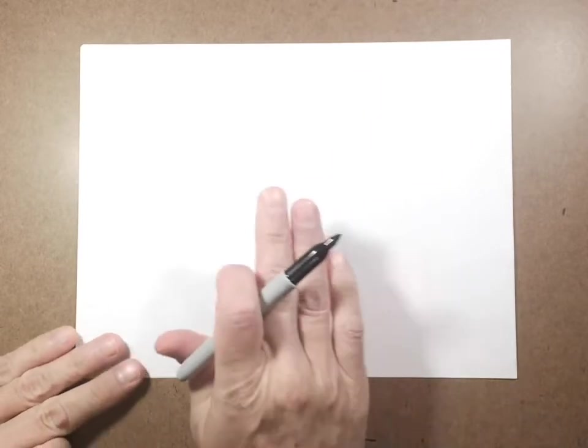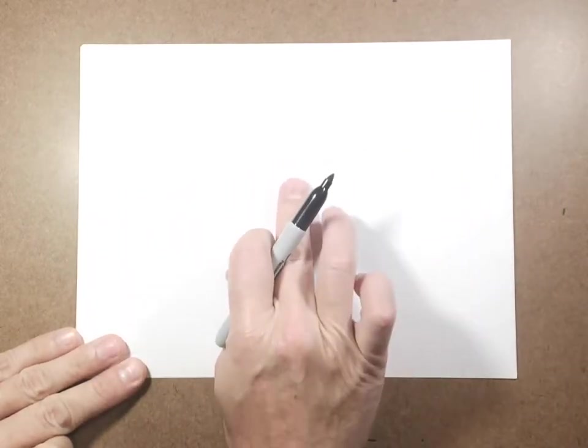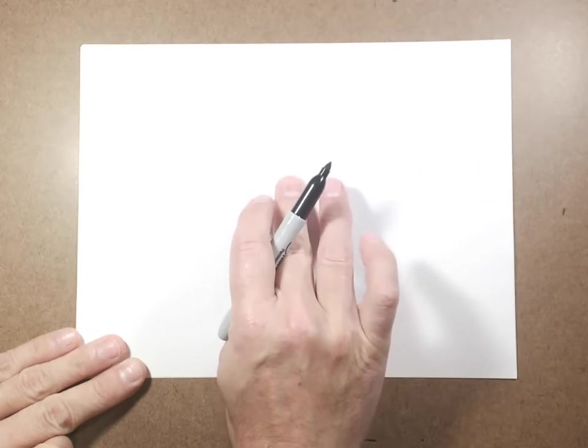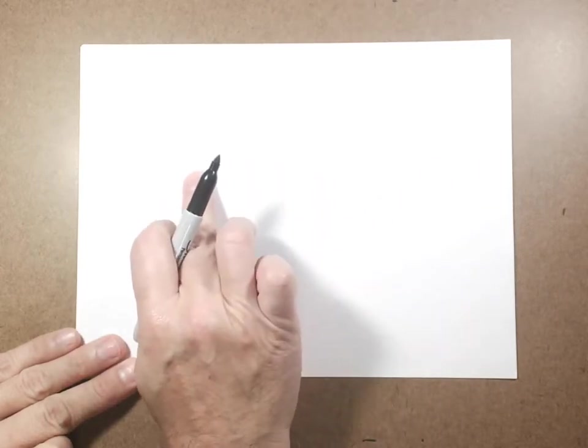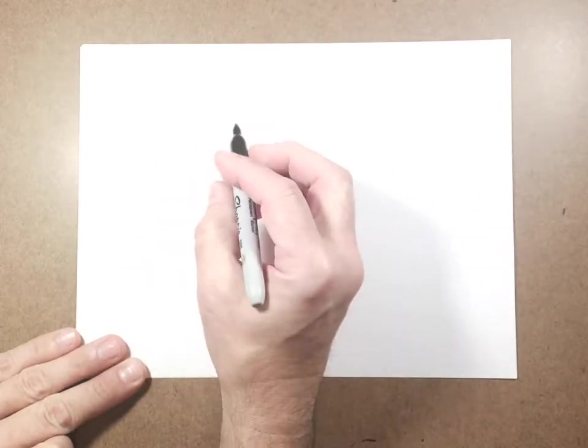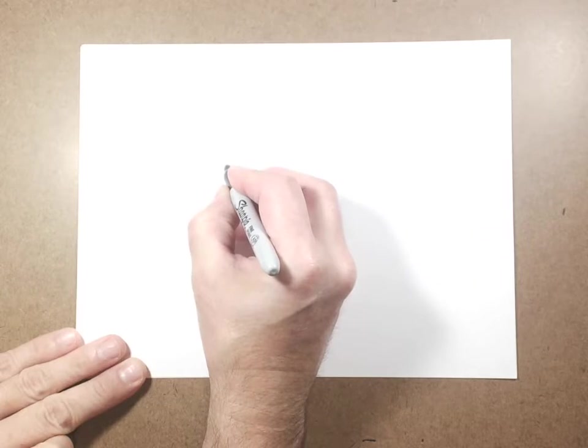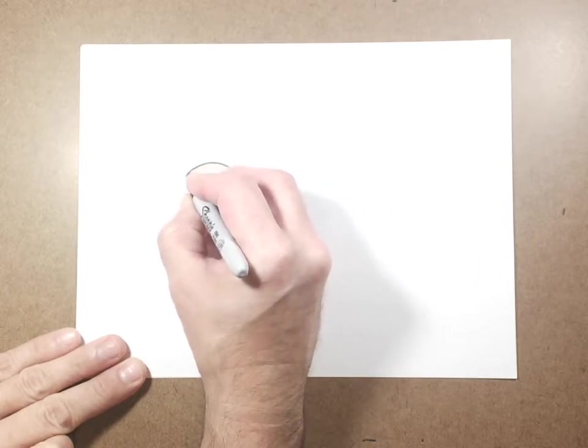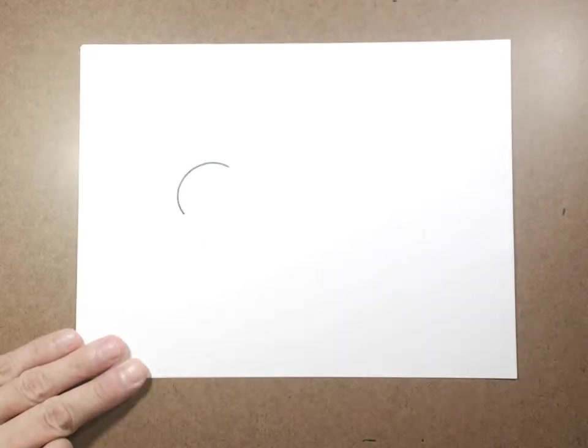Our first one we're going to start. We're going to do a cute little dragon today. We are going to start. You want to have your paper horizontal. If I have the middle of the paper right here, I'm going to go over just a little ways to the left. And then I'm going to start right about in the middle, and I'm going to draw a curved line that comes around like that. So it's kind of like a half circle, but kind of tilted.